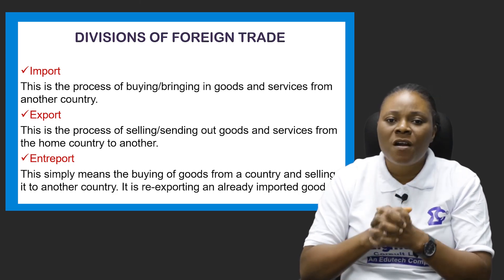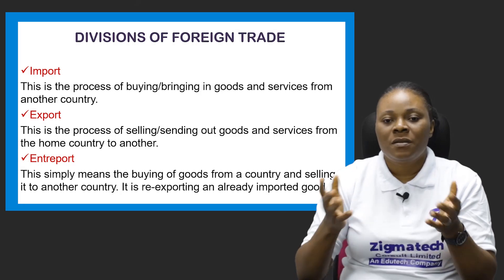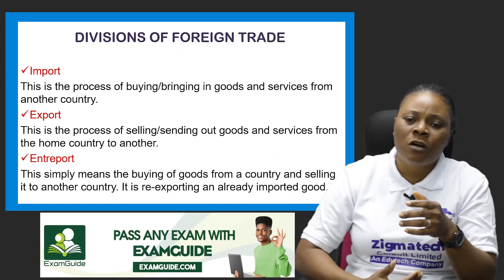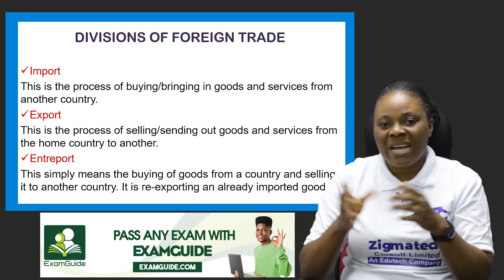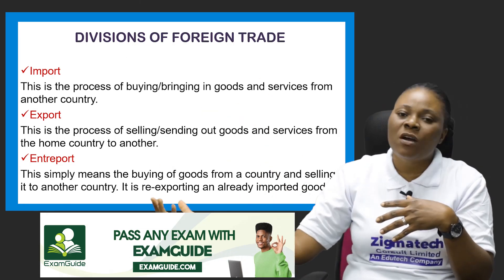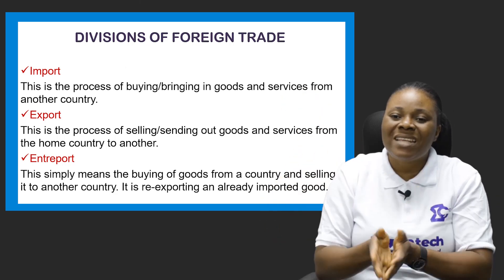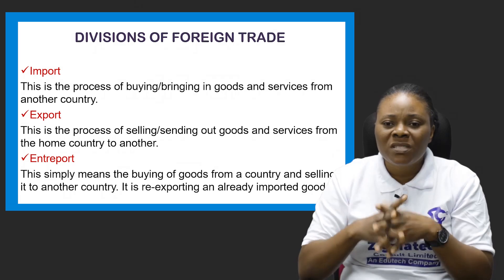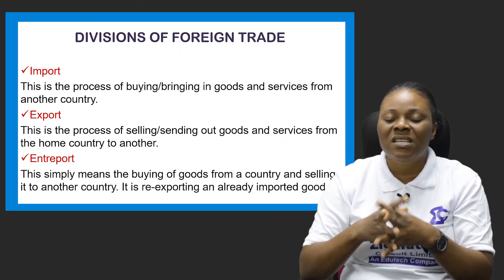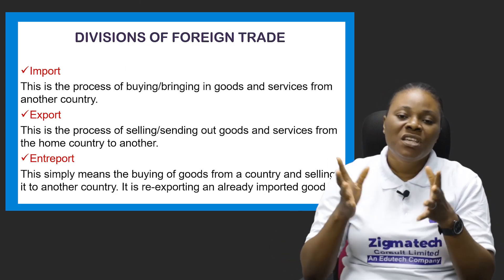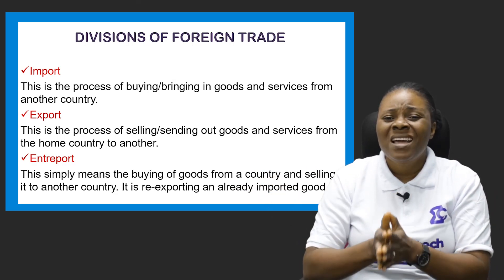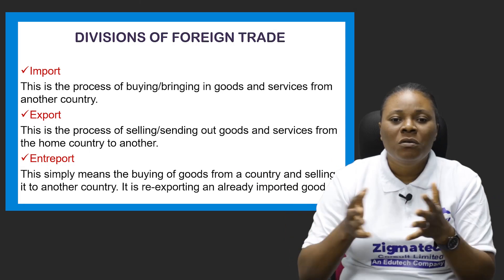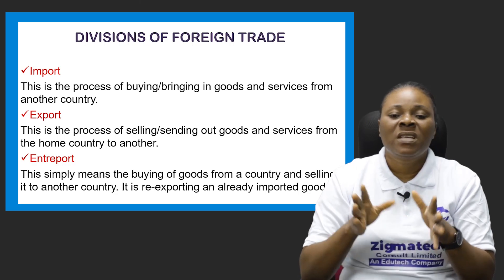The second division of foreign trade is export, which is the opposite of import. Export is the sending out or selling out of excess goods from a particular country to other countries. Import is bringing goods in from other countries; export is sending out or selling out excess goods from your own country to other countries. In Nigeria, the main export commodity is crude oil, along with cocoa, rubber, and tin.